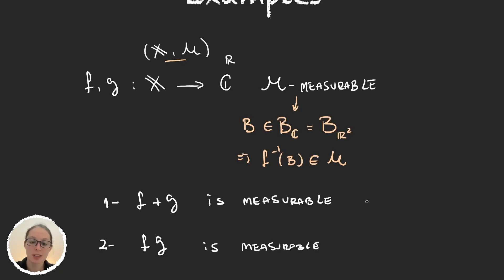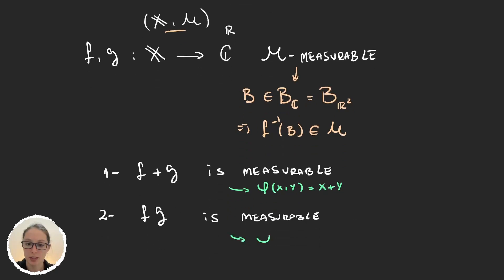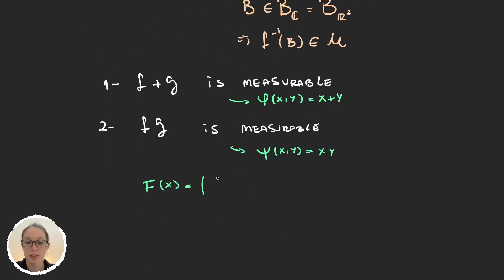To prove these two things, all we have to do is — for the first case — consider a function phi of (x, y) that takes two numbers and gives us their sum. And for f times g, we have phi of (x, y) returning the multiplication. Then define a function F(x) = (f(x), g(x)). These three functions are measurable because f and g are measurable, and we can write f plus g and f times g as the composition of these functions. The composition will be measurable. I'll leave this as an exercise.